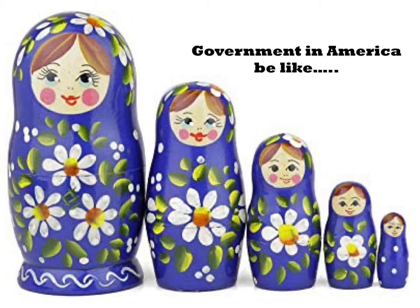When you look at this Russian nesting doll image, it reminds you that there's this layer upon layer upon layer of government in America. When we think of American government, the federal government has some powers and responsibilities, the state government has power and responsibilities, and the local government has power and responsibilities. Some of those overlap — for example, taxes. You pay local taxes, state taxes, and federal taxes.